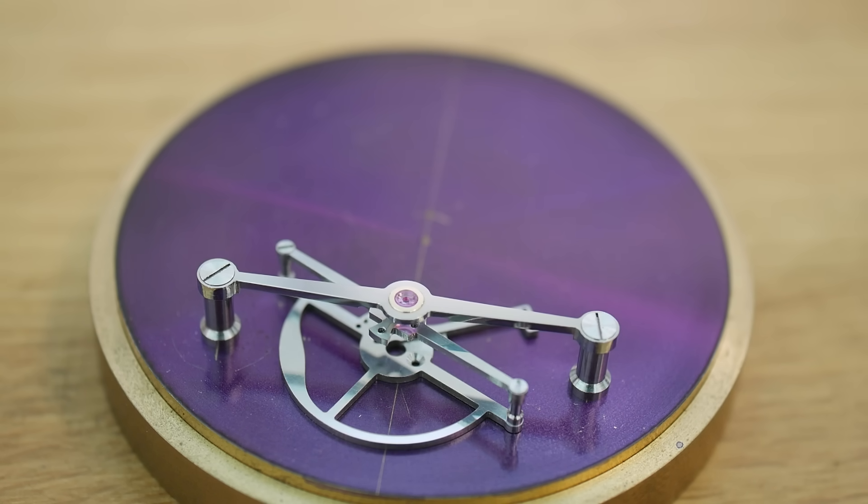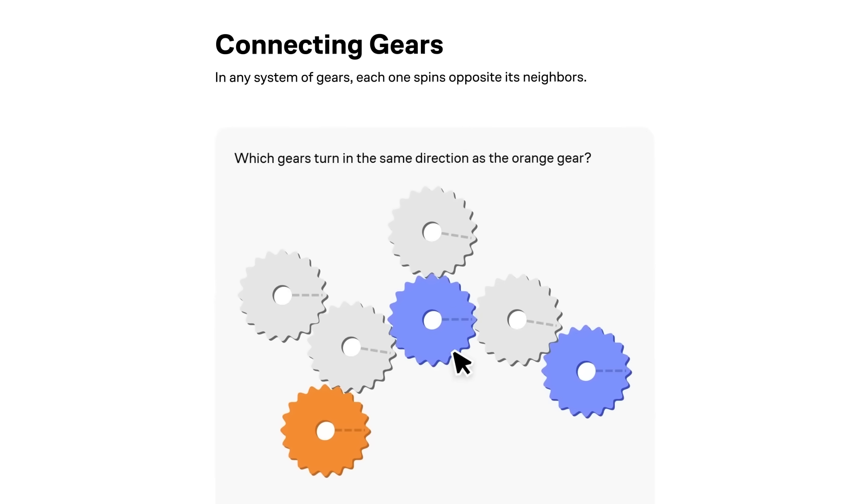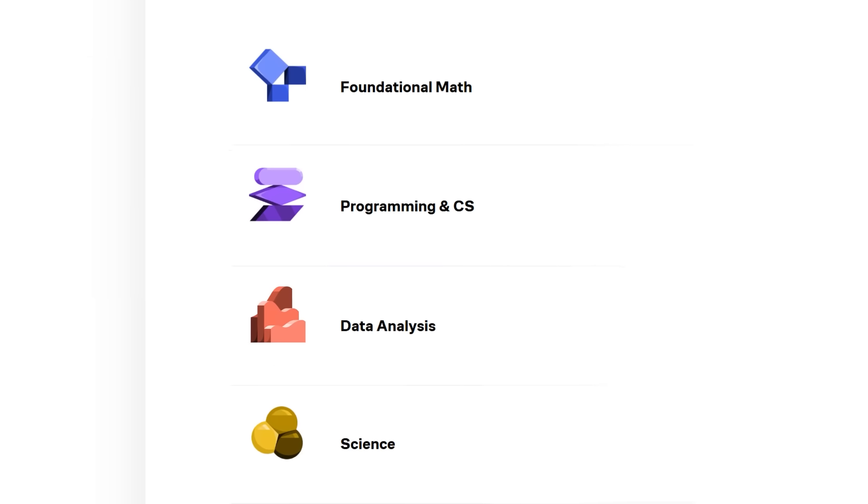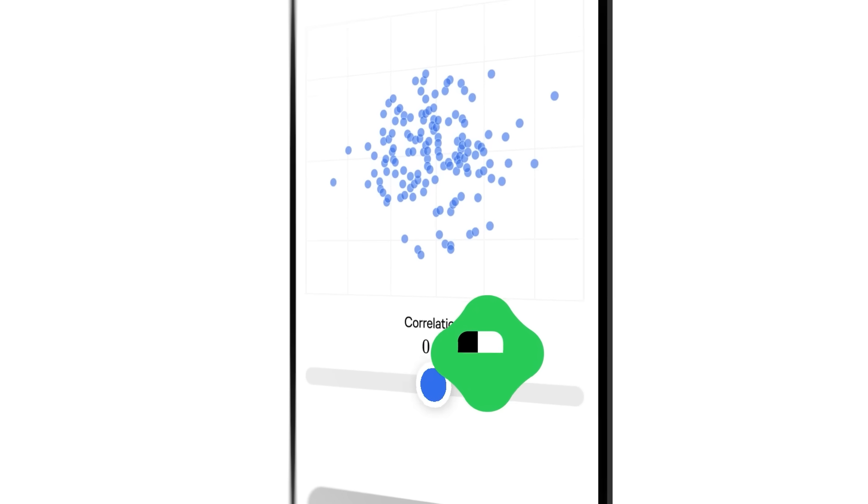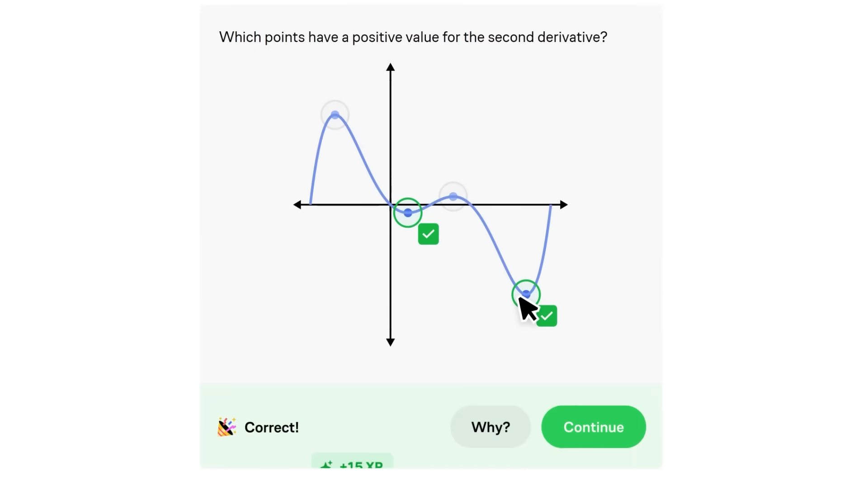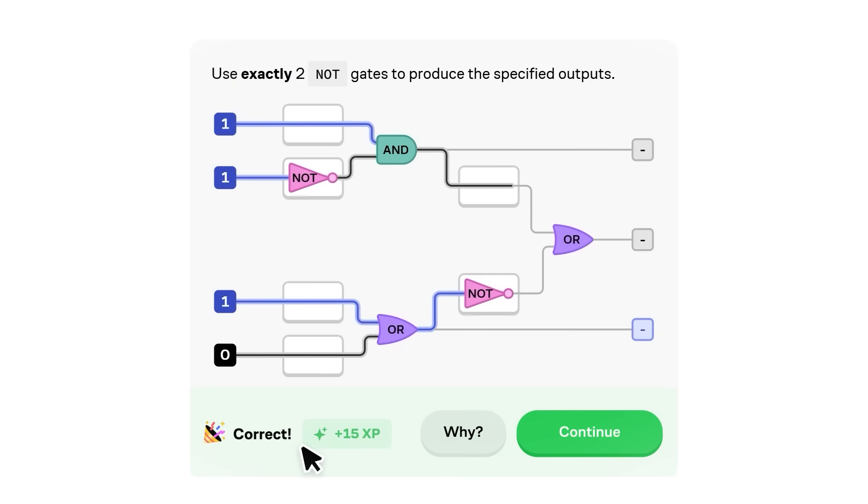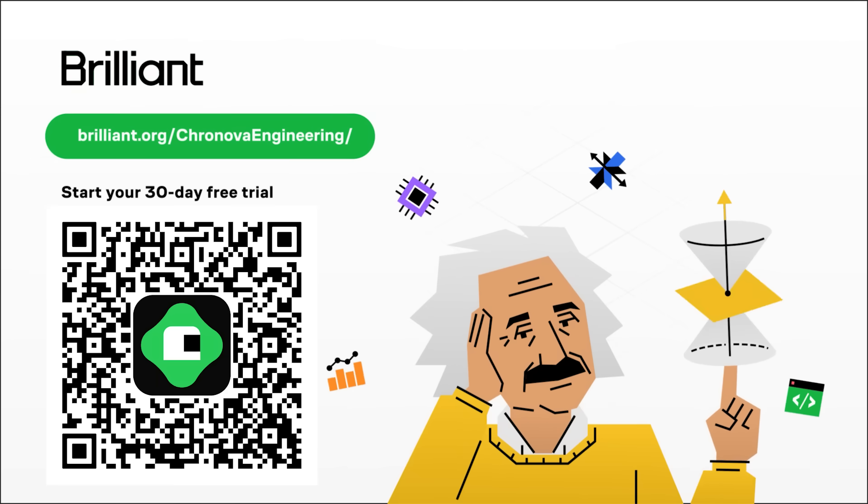Clocks and watches embrace a wide range of scientific concepts to accurately measure the passage of time. If you want to explore them further, check out this video's sponsor, Brilliant. Brilliant helps you get smarter every day with thousands of interactive lessons in maths, science, programming, data analysis and AI. Brilliant helps you build your critical thinking skills through problem-solving, not mindless memorization. Whether you're satisfying your own curiosity or upskilling for your career, learning a little every day is one of the best ways to keep your mind sharp. Brilliant's science courses help you understand our world by exploring physical principles, whether that's the gear systems in mechanical clocks or the electronic circuits in digital watches. To try everything Brilliant has to offer, for free for a full 30 days, visit brilliant.org slash cronovaengineering, scan the QR code on screen, or click on the link in the description. You'll also get 20% off an annual premium subscription.